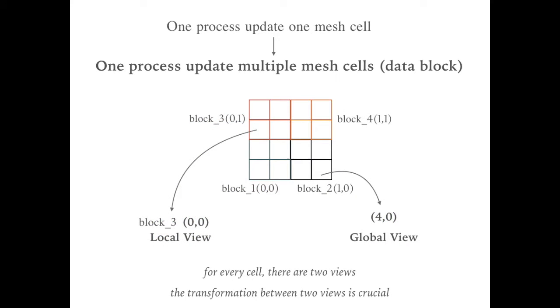One important distinction is different views of the data index. For this example, if the figure in the center position is the global mesh, and different color represents the data block in different process, every block is indexed by the coordinates in block level. In this example, we have four blocks.